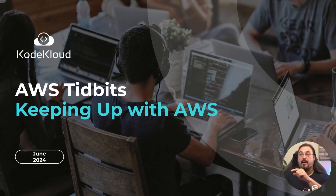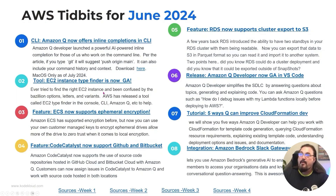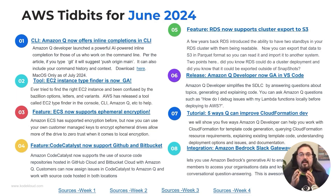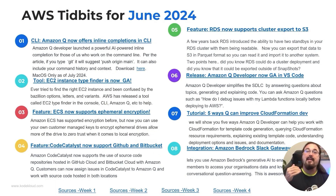Okay, here we are diving in — Keeping Up With AWS, June. So let's talk about number one. Number one is one of the two feature releases for the Amazon Q for developer offering.